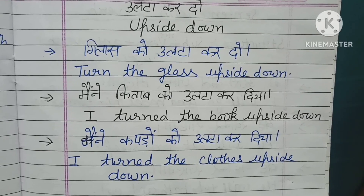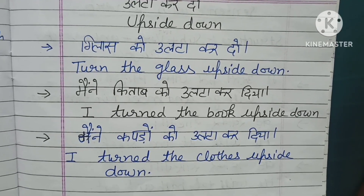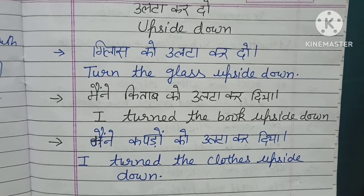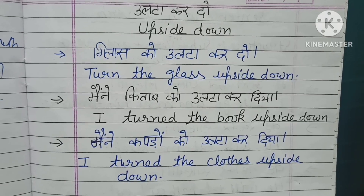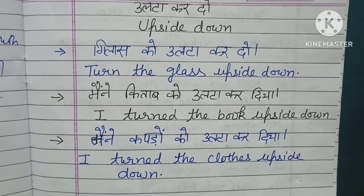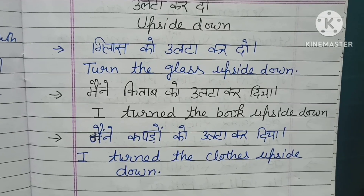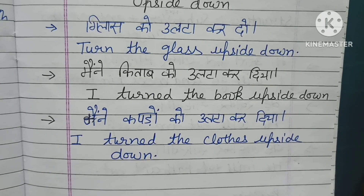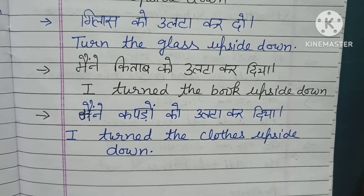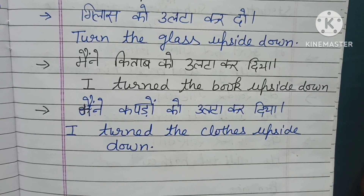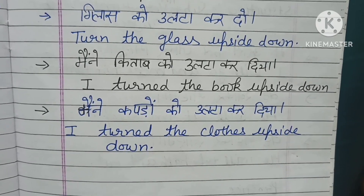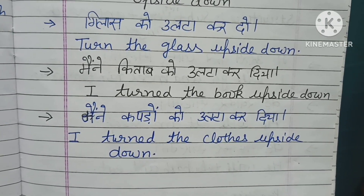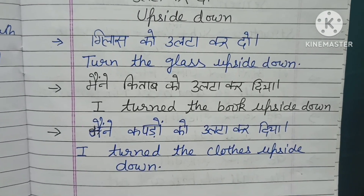Ulta kar do — for sentences like 'ulta kar do,' 'mainne kitab ko ulta kar diya,' 'mainne kapdo ko ulta kar diya,' which we use in our daily life — in English we use 'upside down.' For example: 'Turn the glass upside down.' 'I turned the book upside down.' 'I turned the clothes upside down.' This way you can make all sentences involving 'ulta karna' using 'upside down.'